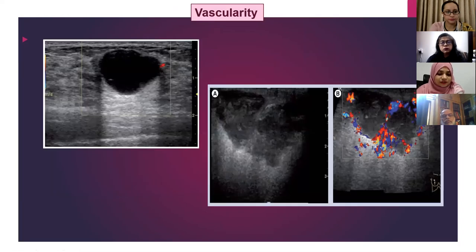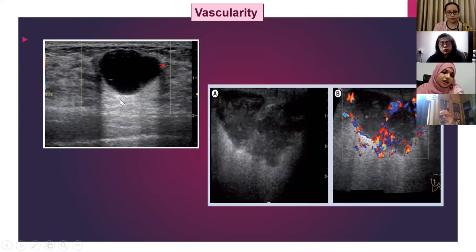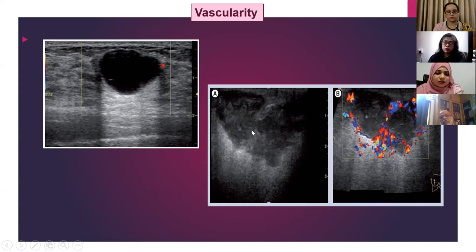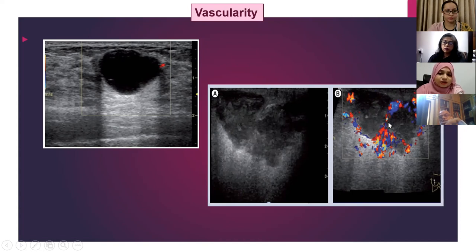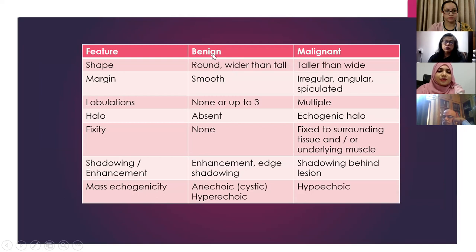Regarding vascularity: with the advantage of color Doppler, we can evaluate the vascularity of a lesion, which helps identify its nature. For example, an irregular hypoechoic lesion giving strong posterior enhancement may be ambiguous. After applying color Doppler, vascularity at the periphery and inside of the lesion can confirm it is a solid lesion, not a cystic one. A table showing differences between benign and malignant lesion findings is also presented here.